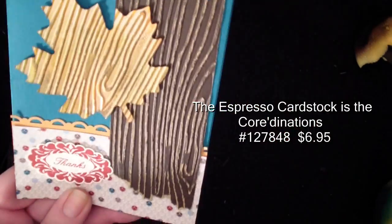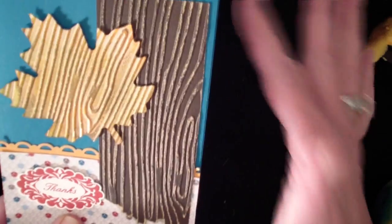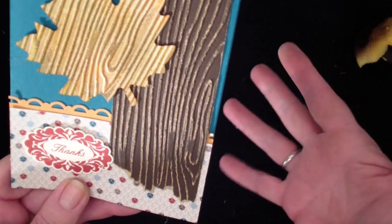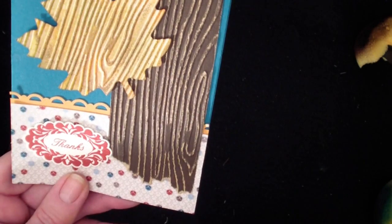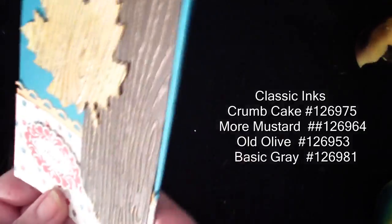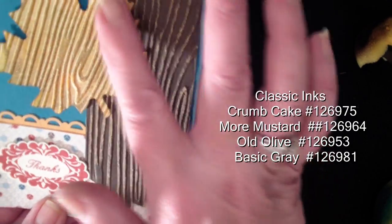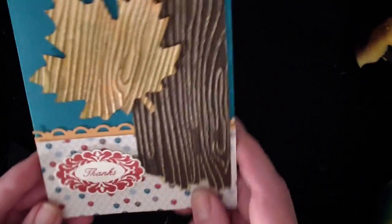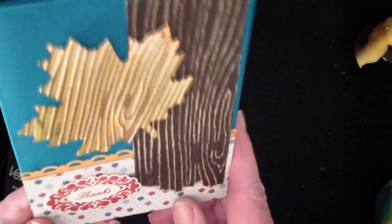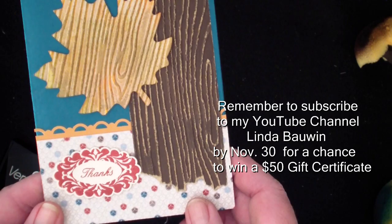This card I only did the patina technique for the leaf. So again, all of the card samples I used Very Vanilla as my base, and then Crumb Cake. Then with this one I sponged on more Mosterd, Old Olive, and went over with the Gray. So I finished that one up with the Gold Powder again. So I hope you enjoyed the technique today, faux patina. And that you will join me again real soon for my next video.